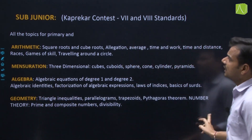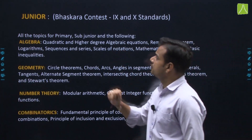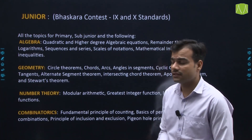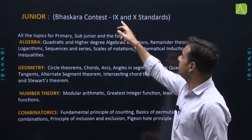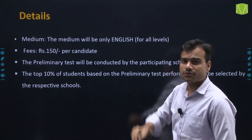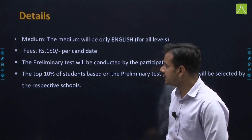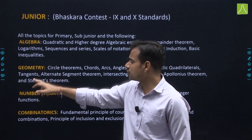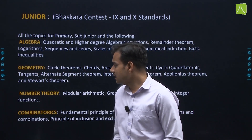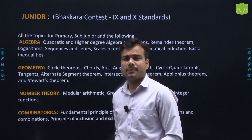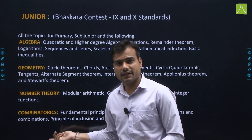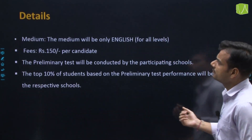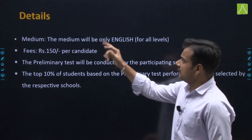For the Junior Contest — in which 9th to 10th class students appear — the syllabus includes algebra, geometry, number theory, permutation, combinations, and combinatorics topics.